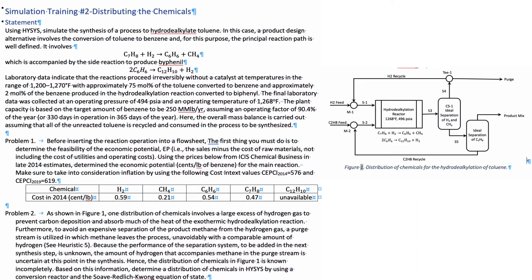There's also information about the plant capacity. The plant capacity is based on the target amount of benzene. In this particular case, we want to produce 250 million pounds per year and we're assuming an operating factor of 90.4% of the year or approximately 330 days in operation in a 365 day year.